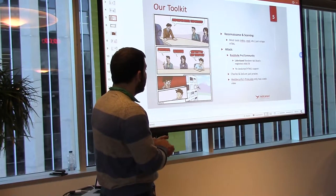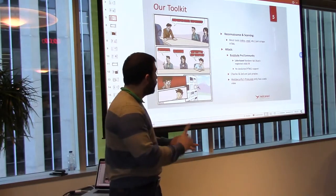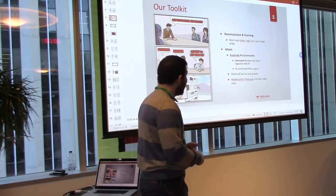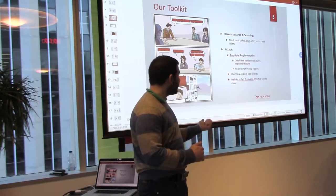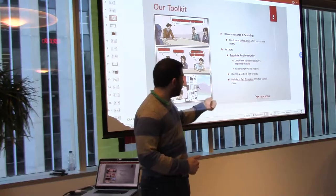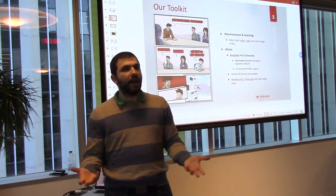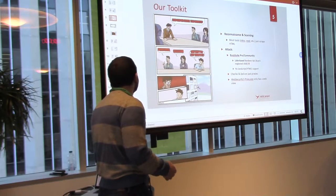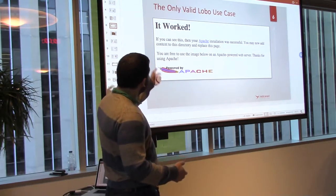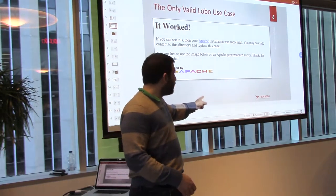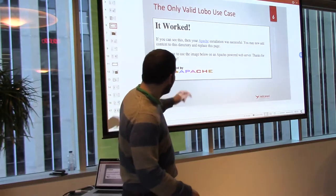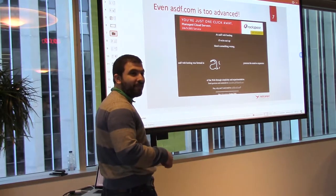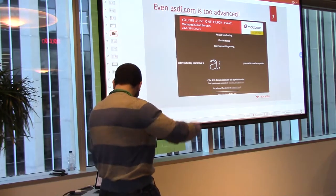What does our toolkit look like? Mostly our toolkit looks like Nikto — cool for reconnaissance. On the attack side we have Burp Suite, which has the very sad Lobo browser tab with no JavaScript support. There's Charles and Zed. And the only thing out there that actually has JavaScript support is Web Securify's proxy.app, which is not really a security tool — it's more of a debugging tool. We really need to advance ourselves in this field.